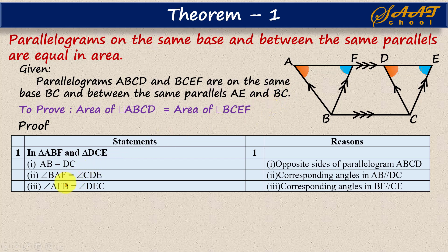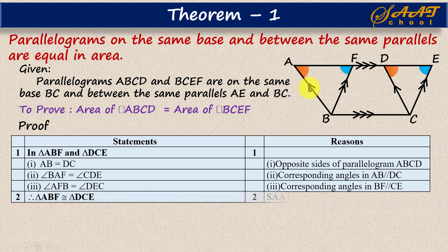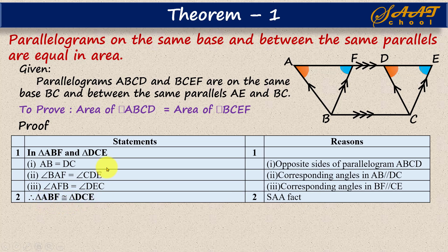Similarly, angle AFB equals angle DEC for the same reason — these are corresponding angles because opposite sides are parallel. So we have side-angle-angle (SAA). From this fact we can say these two triangles are congruent by the side-angle-angle criterion. If two triangles are congruent, then they are equal in area, because the area of congruent triangles are equal.